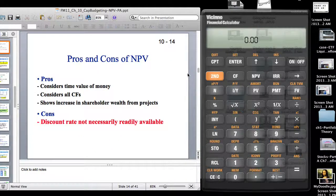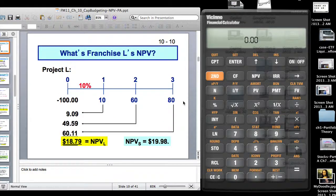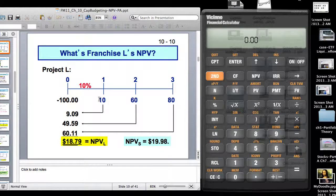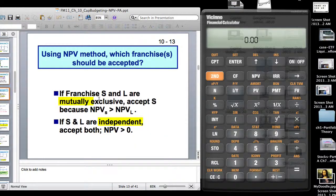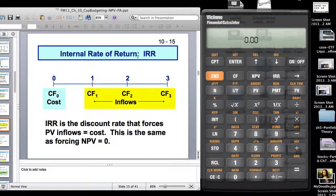The last lecture stopped at the pros and cons of NPV. NPV is still the golden standard in capital budgeting methods because it considers time value of money, considers all cash flows, shows increase in shareholder wealth. The problem is the discount rate is not readily available. To avoid that, the internal rate of return was devised.